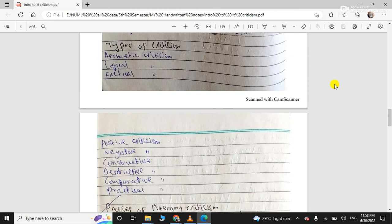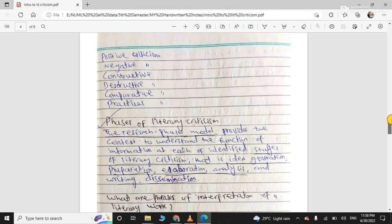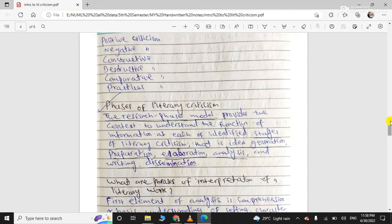There are many types of criticism. We perceive that criticism is always negative, but in literary criticism the thing is totally different - it's constructive criticism. Types include aesthetic, logical, factual, positive, negative, constructive, destructive, comparative, practical. In literary criticism, we focus on positive criticism. Obviously, when criticism is done on any literary work, then we know if it's worth it. Criticism decides whether a piece of literature is good or bad.